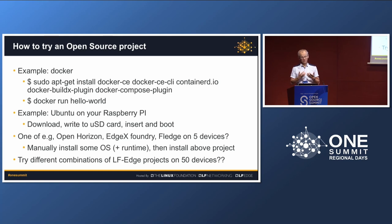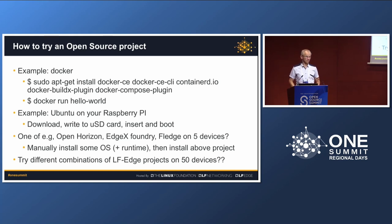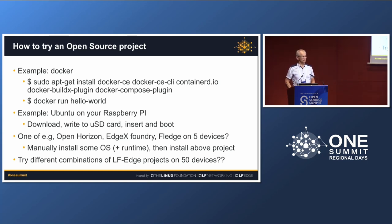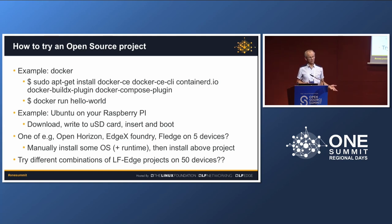But inside LF Edge we have a large number of different projects you might want to try out on multiple devices. First you need to install some OS on those devices, maybe you also need to put a Kubernetes or Docker runtime on those devices - some additional customization. Then you're ready to actually install the actual project in the form of some containers or software. What we'd really want to enable is people trying different combinations of LF Edge projects out on devices at the user edge - say on 50 devices.